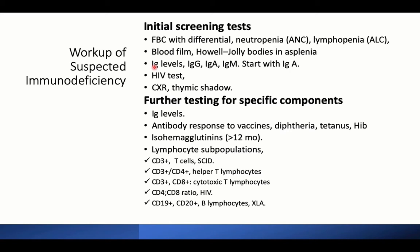Measure immunoglobulin levels, starting with IgA as IgA deficiency is the most common. If IgA is normal, immunoglobulin deficiency is unlikely; if deficient, measure IgG, IgA, IgM, and IgE. HIV testing is important, especially for infants, as the most common HIV presentation in children is maternal transmission. Chest X-ray in infants is important to look for the thymic shadow — absent in agammaglobulinemia, severe combined immune deficiency, and DiGeorge syndrome.